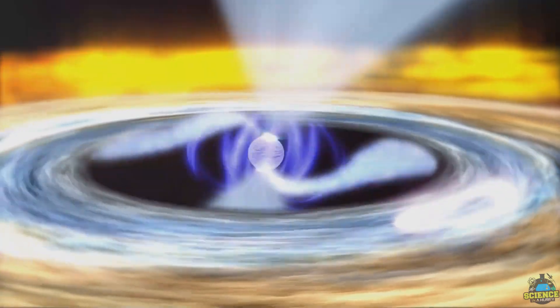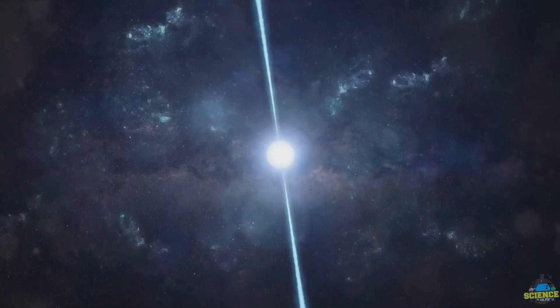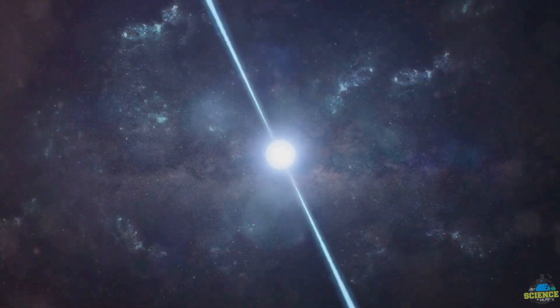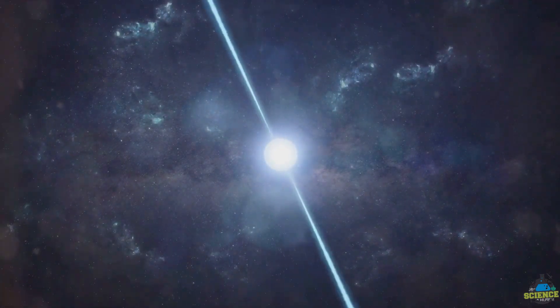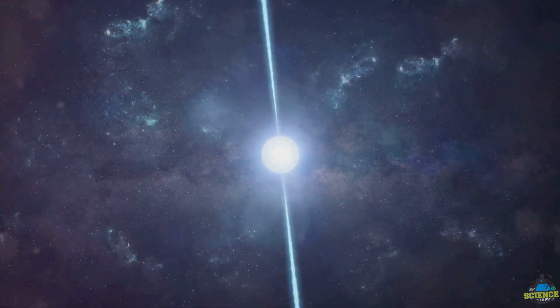Despite their small size, neutron stars have a mass about 1.4 times that of our Sun, yet they exhibit an astonishing level of density. This extraordinary density allows them to rotate at speeds so rapid that they seem almost unbelievable.